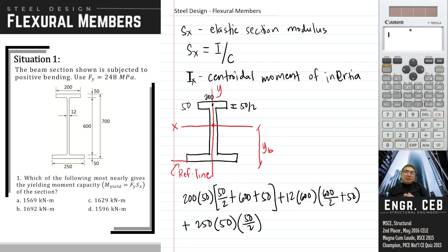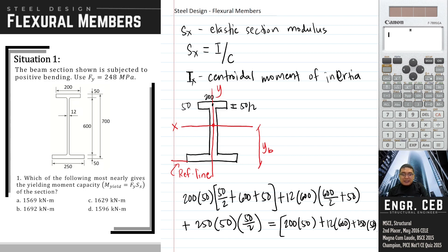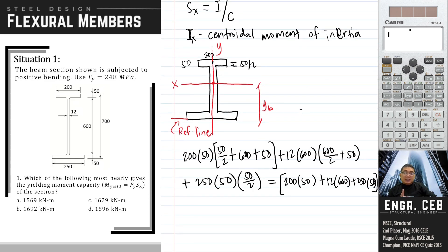By Varignon's theorem, the moment of each part is equal to the moment of the whole. So considering the section as a whole, we get the sum of the areas of all the rectangles — 200 by 50, plus 12 by 600, plus 250 by 50 — multiplied by y_b, the distance of the centroid of the total area from the reference line. We can now solve for y_b.